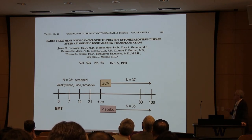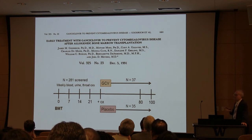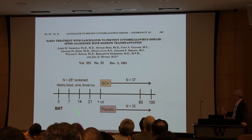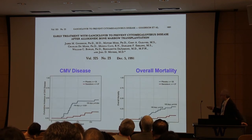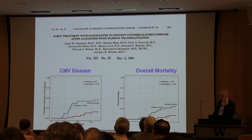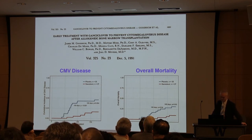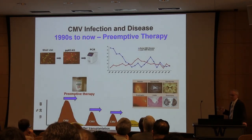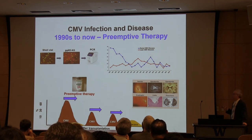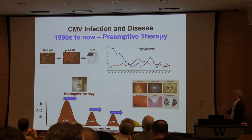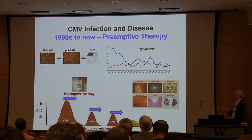In a landmark study back then in 1989, Joe and his team and the late James Goodrich published a study where they used the drug ganciclovir in people who screened positive in blood, urine, or throat and randomized to placebo, finding both a tremendous impact on CMV disease and overall mortality. This became the roadmap for analysis of many subsequent antiviral drugs. Over the next couple of decades, through optimization and innovation in diagnostics, this strategy called pre-emptive therapy was refined and used in HCT patients up until today.